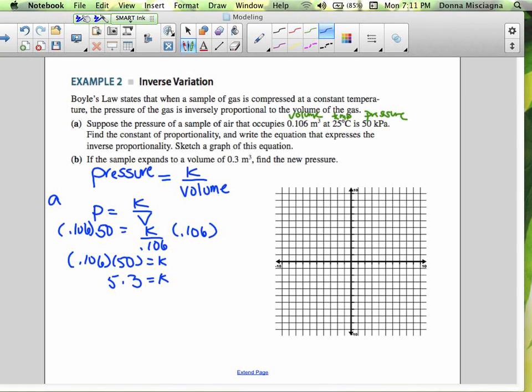So that's part a. That's our constant of proportionality. Write the equation that expresses the inverse proportionality. So now once we find k, we can write the equation. Our equation is p equals 5.3 divided by volume. And so now we can use that to find either the volume or the pressure.